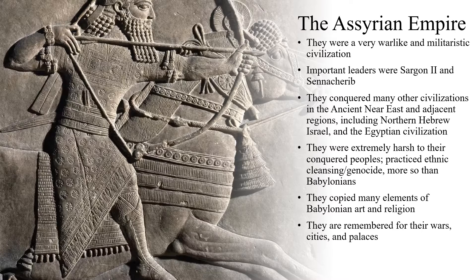Some of their most important leaders were Sargon II, named after the founder of the Akkadian Empire, and Sennacherib. They conquered many other civilizations in the ancient Near East and adjacent regions, including the Northern Hebrew Kingdom of Israel, and they also conquered the Egyptian civilization. The Assyrians were extremely harsh to conquered peoples — they practiced things that we might call ethnic cleansing, even genocide today, far more so than the Babylonians, who really wanted to make conquered peoples assimilate and become Babylonian.